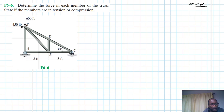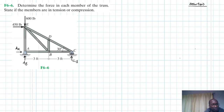We have the hinge at A, which gives us reaction components Ay and Ax, and then the roller at C will only have one reaction, Cy. Let's apply the equations of equilibrium — summation of moments about point A equal to zero, with clockwise as our positive reference.